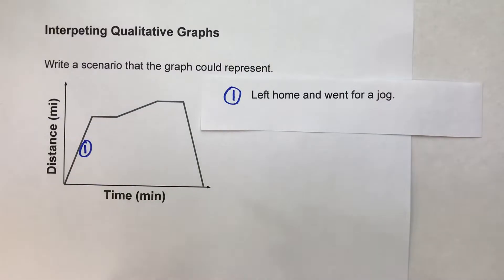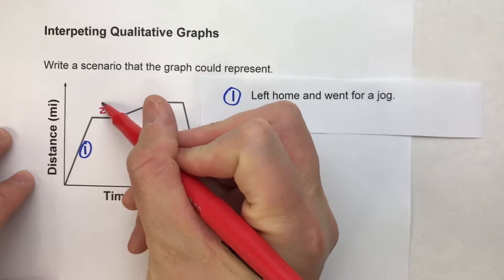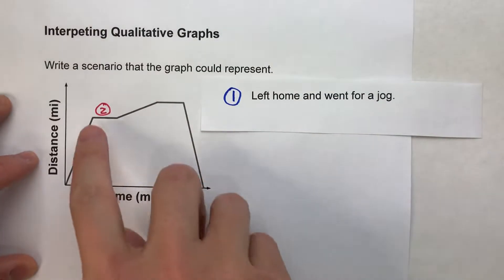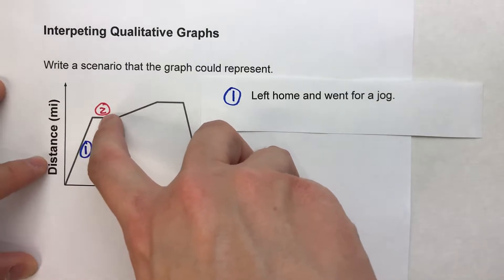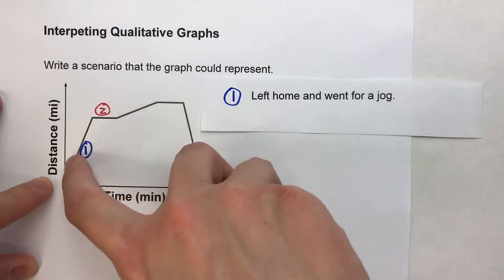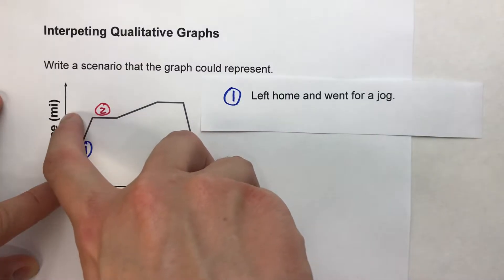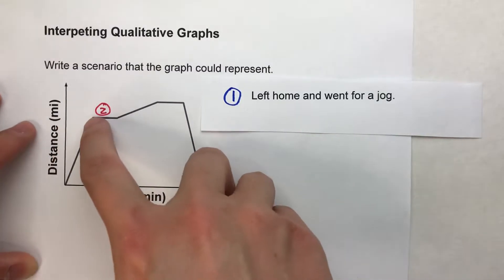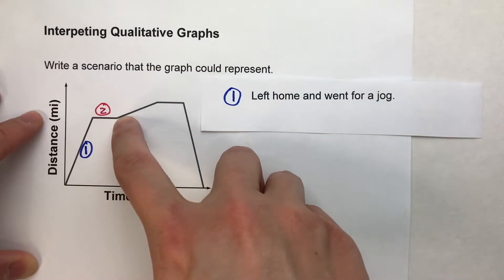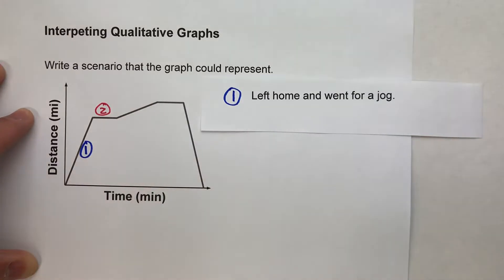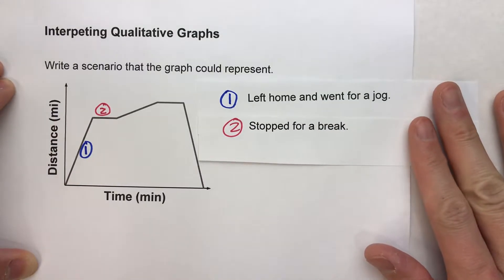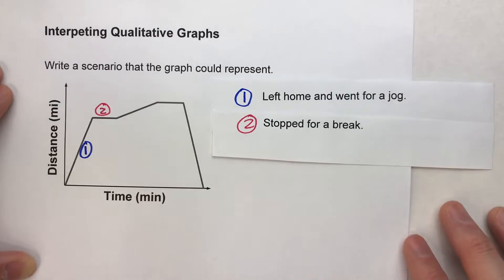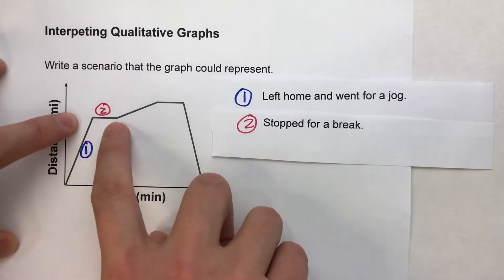Now the second interval notice is flat. That's a constant interval meaning the distance doesn't change during this interval. See how it's whatever distance this is at? We don't know what number it is but we do know that distance didn't increase. It stayed the same. So in our story we could say well we stopped for some reason. Maybe we stopped to take a break. So that's the second interval.